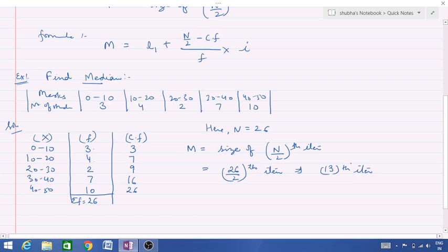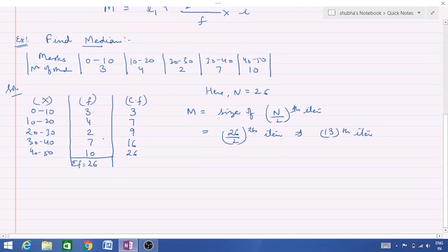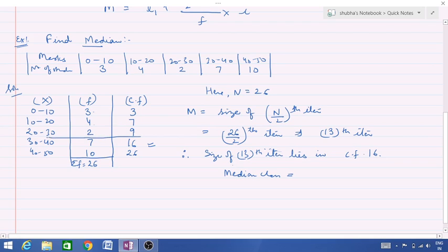Now we look for this 13th item in cumulative frequency. Now where is cumulative frequency? Where is 13th item? 16. So here we can write size of 13th item lies in cumulative frequency 16. That means median class is the class corresponding to this.